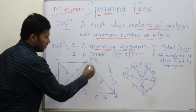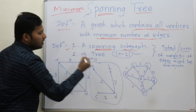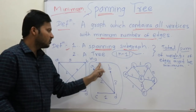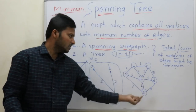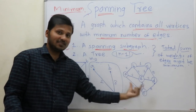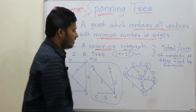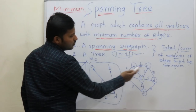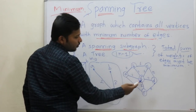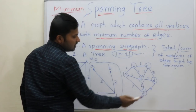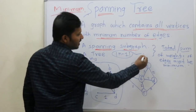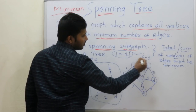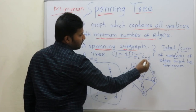In this way we can form a minimum spanning tree. Now let us go for another graph. How many vertices are there? 1, 2, 3, 4, 5 and 6. As 6 vertices are there, the number of edges should be 5.